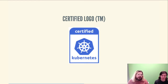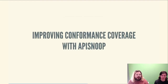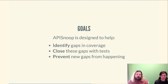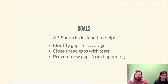That was about verifying conformance coverage for a vendor. Now we can talk about improving conformance coverage, and a great tool for that is API Snoop. For conformance to have value and meaning, the API must be reliable and consistent, and a way to ensure that consistency is through conformance tests. API Snoop is intended to help with all aspects of test writing and coverage — from identifying gaps to closing those gaps with tests and preventing new gaps from happening.